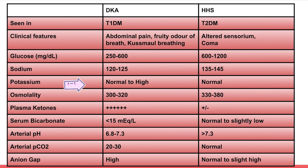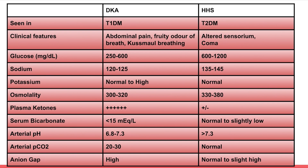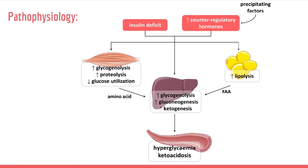Sodium is low in DKA (120–125) whereas in HHS it is almost normal. Potassium is normal to high in DKA but normal in HHS. Osmolality is 300–320 in DKA versus 330–380 in HHS. Plasma ketones are positive in DKA but may be absent in HHS. Serum bicarbonate is less than 15 mEq/L in DKA but normal to slightly low in HHS. Arterial pH is 6.8–7.3 in DKA versus greater than 7.3 in HHS. Anion gap is very high in DKA and normal to slightly high in HHS.